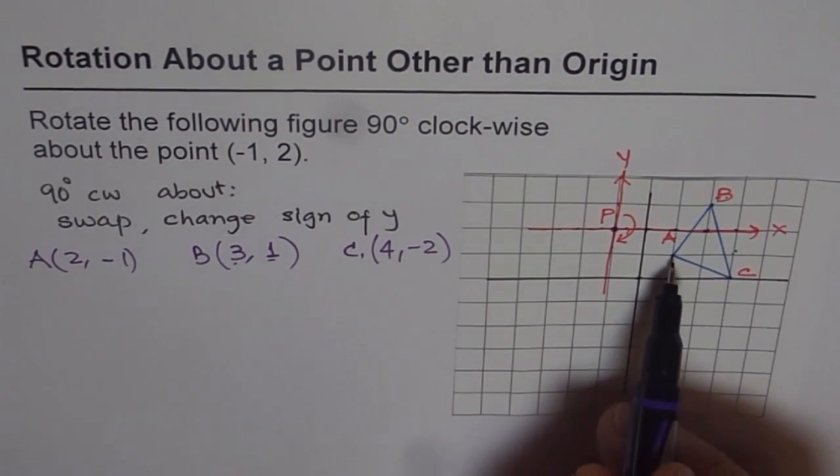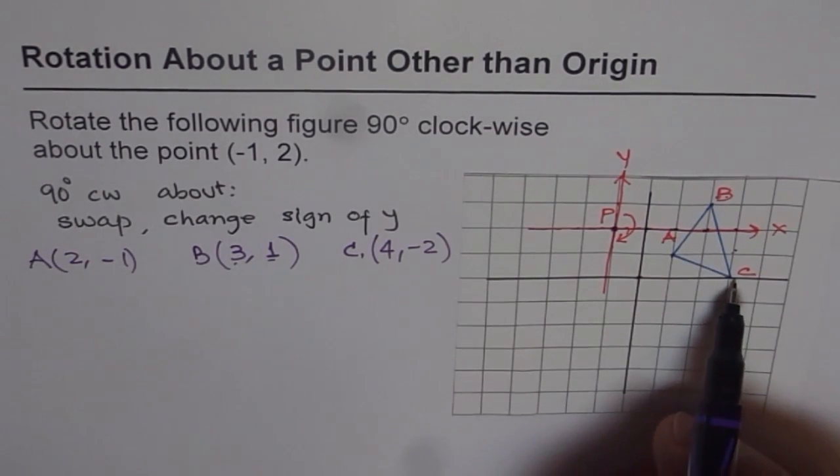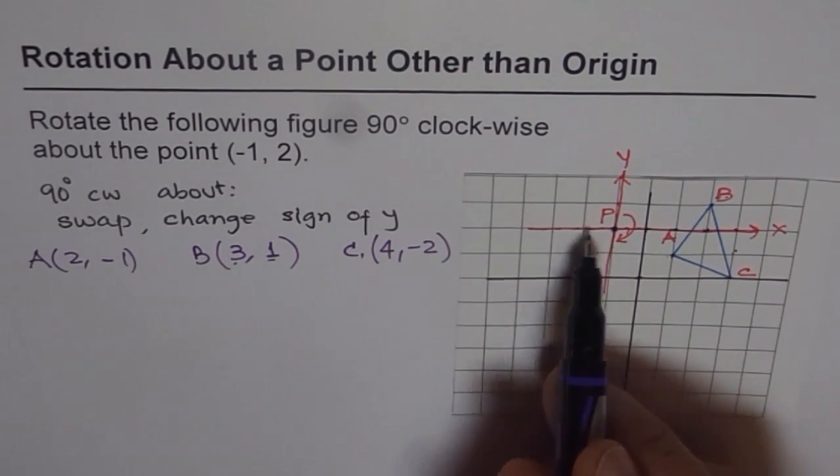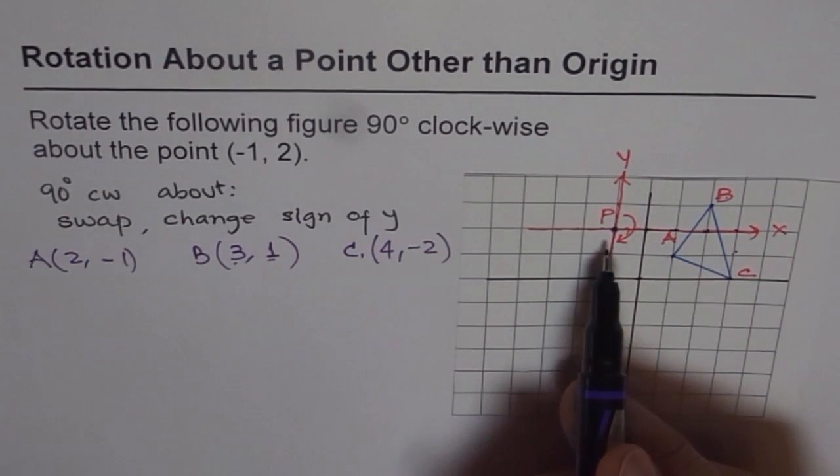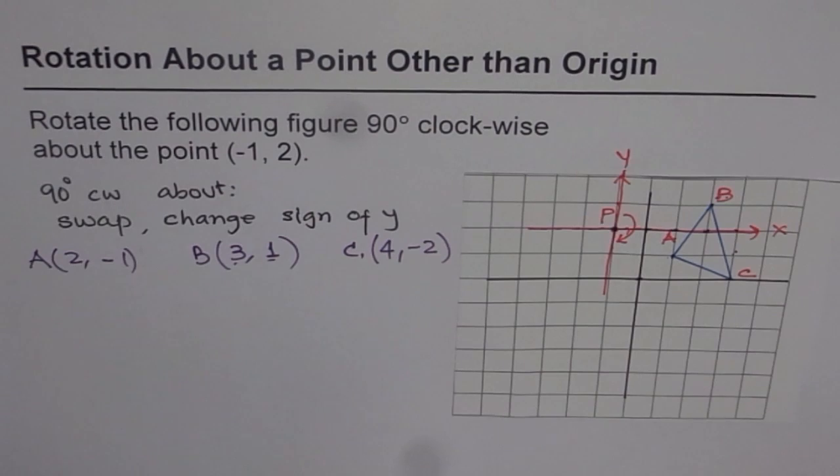So these are the positions for A, B and C with respect to P for our new coordinate system, right? Where P is in the origin. So we just changed the coordinate system and made P as our origin. And now it is simple.